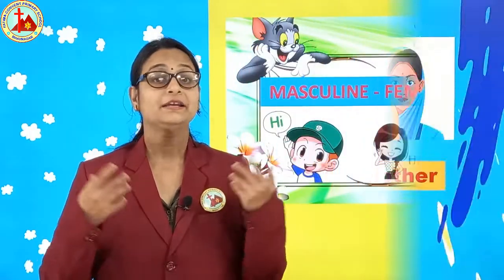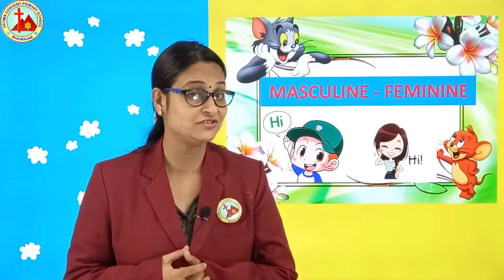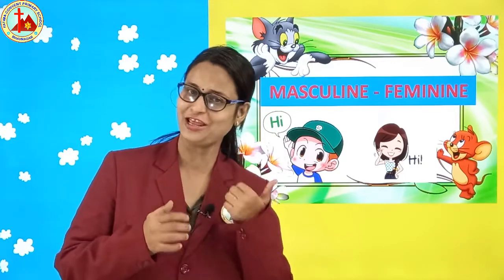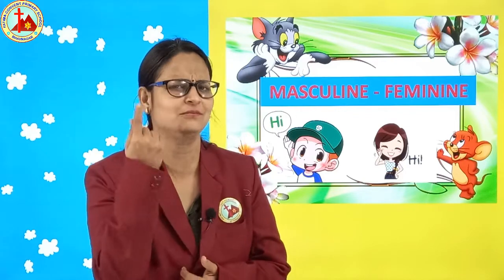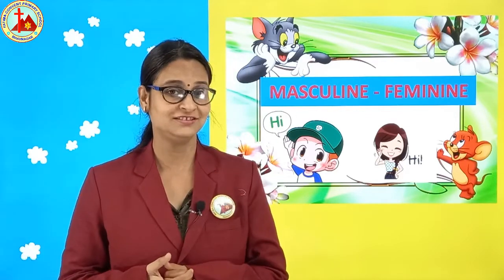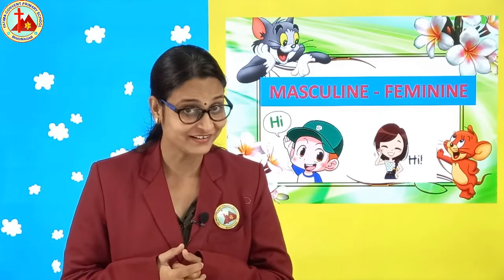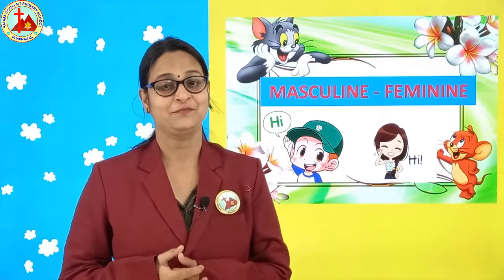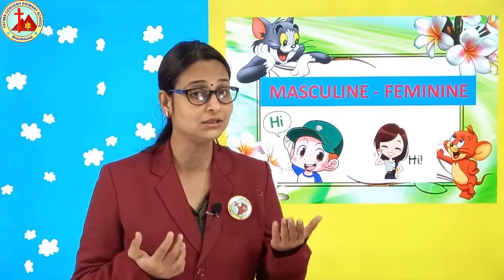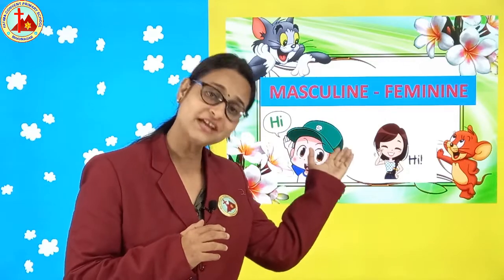Now children, can you give me some examples of masculine gender? Father — very good. One more. Brother — very good. One more. Uncle — good children. So father, brother, uncle — these all are masculine gender.